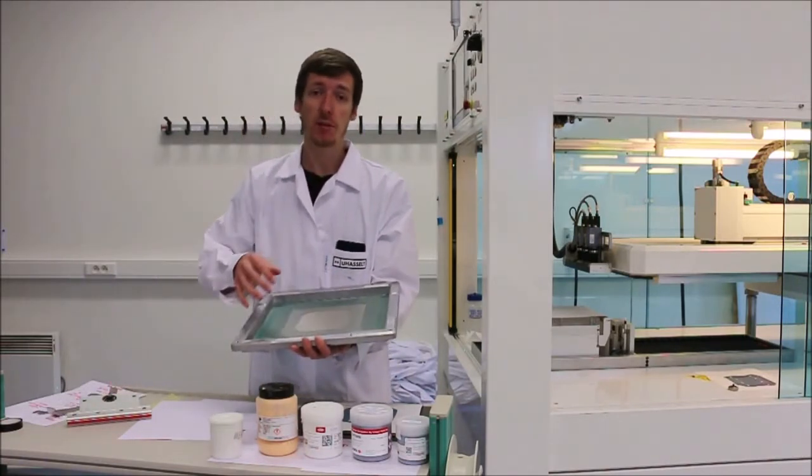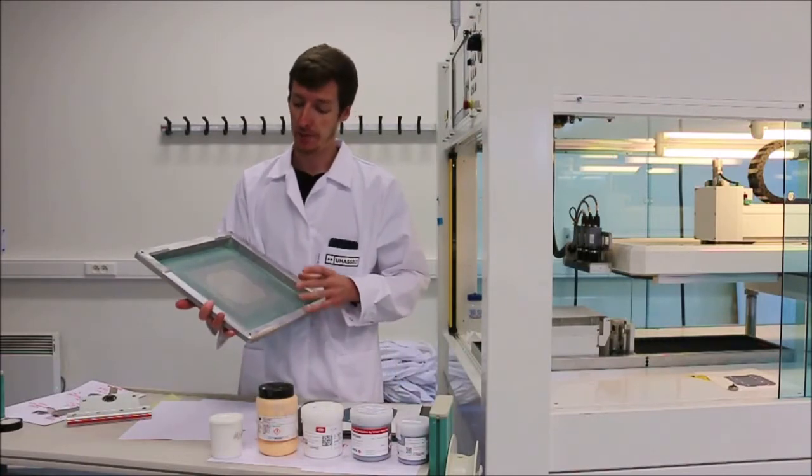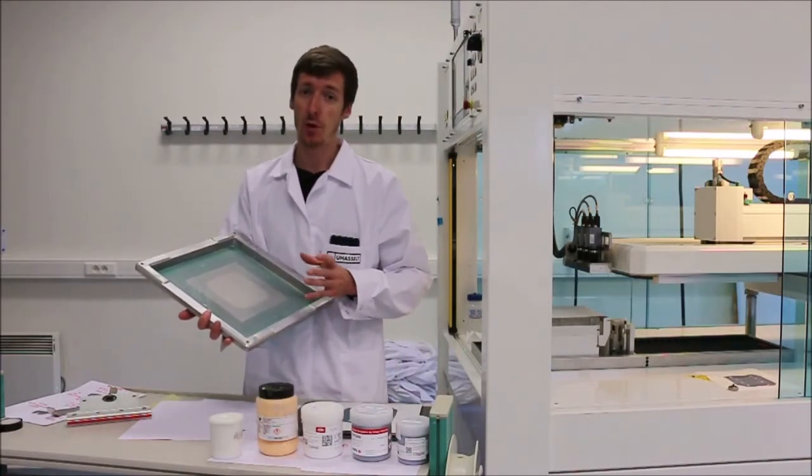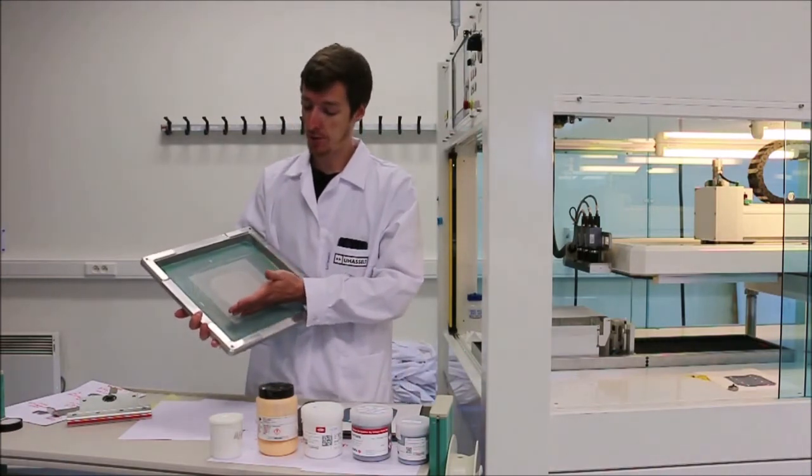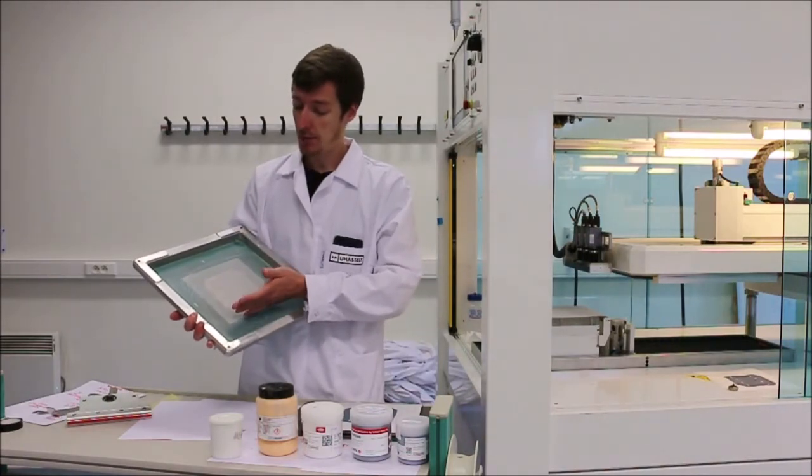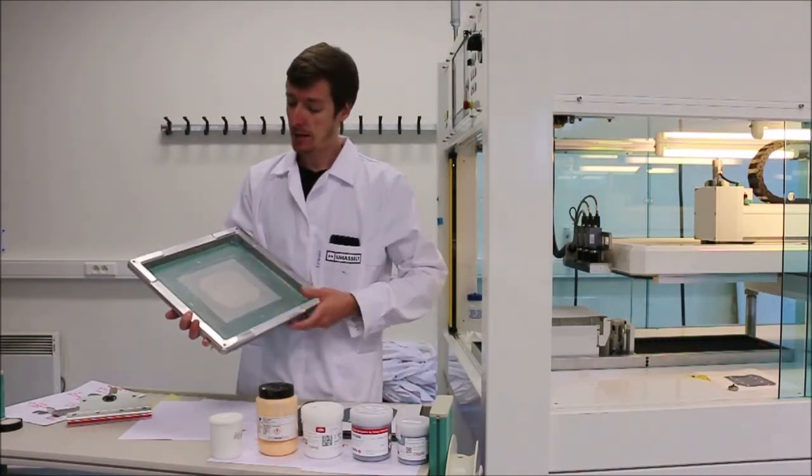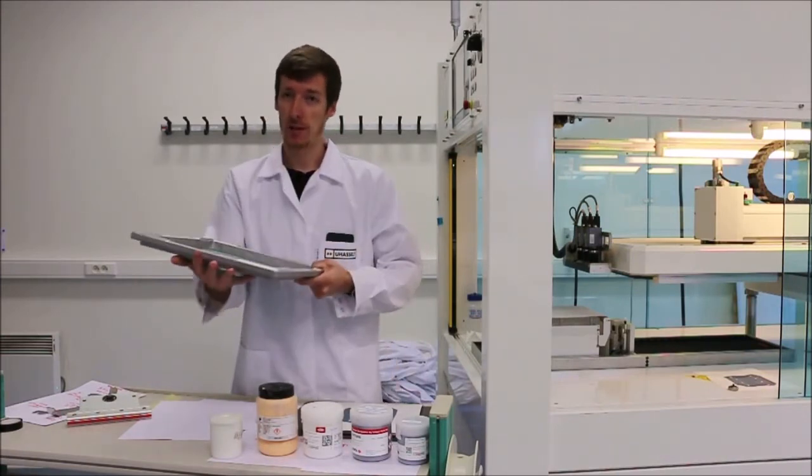In this process we still have a few parameters which we can tune in order to get a better quality. These parameters are mostly the squeegee pressure, which is the force the squeegee applies on our screen during the printing step. Secondly we have our printing speed and third we have the snap-off distance, which is the distance between our screen and our substrate.